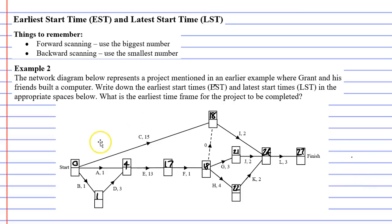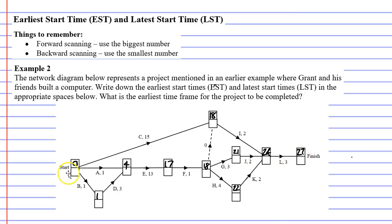We've finished all our earliest start times using the forward scanning method, which means we started at the start and worked forward to the finish. We're now going to find the latest start times using the backward scanning method, meaning we start at the finish and work backward to the start. The finish vertex always has the same latest start time as its earliest start time, so we start there with 27. They should both be the same.